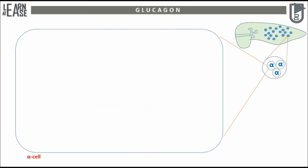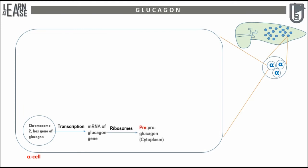The glucagon gene, located on chromosome 2, is transcribed and translated to produce pre-proglucagon, which is 179 amino acids long. Pre-proglucagon crosses the membrane of the rough endoplasmic reticulum and enters the lumen, where proteases act on it to remove some portion of the peptide and pro-glucagon is formed. It is then transported to the Golgi apparatus, where it is processed by a series of proteases to form mature glucagon.